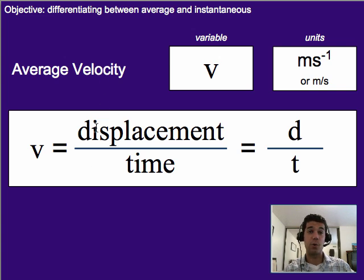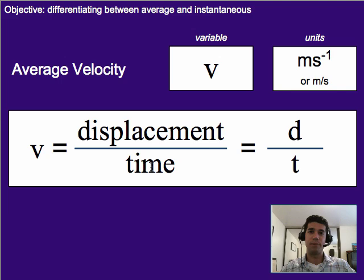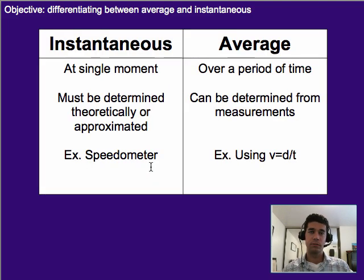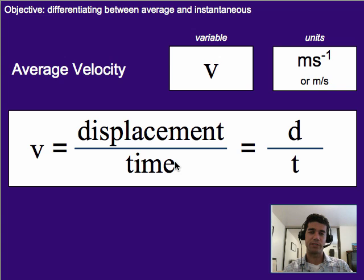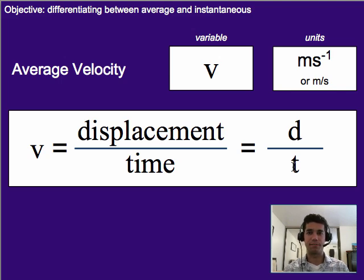If we look at our equation, we have displacement divided by time. The time component means it covers a period of time where this is happening — by definition, that makes it an average velocity. So just to review: instantaneous is at a single moment versus average velocity, which is over a period of time. Instantaneous must be determined theoretically or approximated. As the time in our equation gets really, really small, we can begin to say that that's essentially the instantaneous velocity, as opposed to a bigger period of time where it's an average.